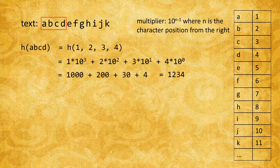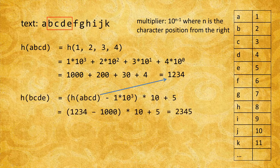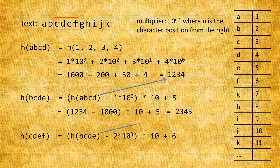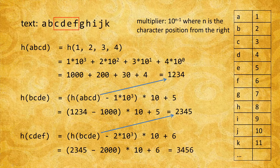So now, when computing the next hash value, the rolling hash function would subtract the first character multiplied by 10 to the power of 3 from the previously calculated hash, then multiply all of the terms by 10, and then add the new character.